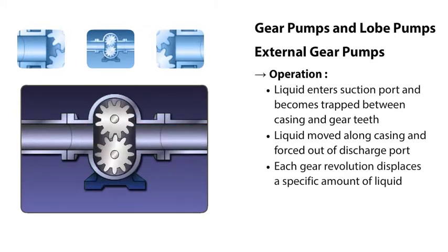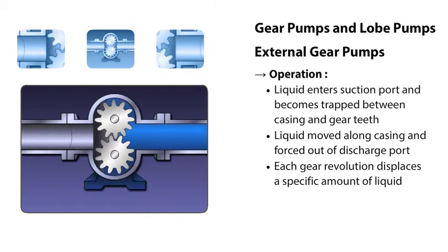On this type of pump, each space between the gear teeth positively displaces a given amount of liquid. So on each revolution that the gears make, a specific amount of liquid is pumped.